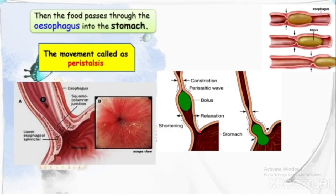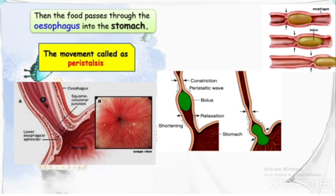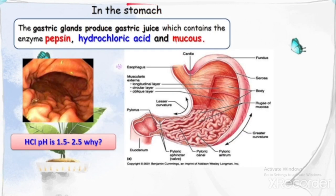Food passes through the esophagus into the stomach. In the esophagus, food undergoes peristaltic movement. Peristalsis is the continuous rhythmic contraction and relaxation of the esophagus that moves food along.